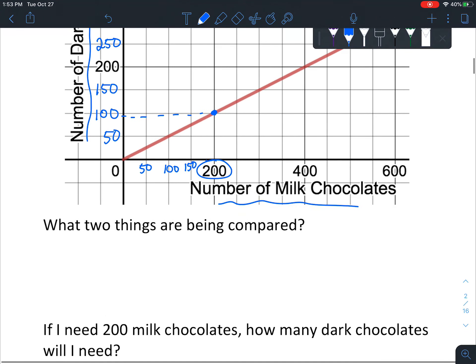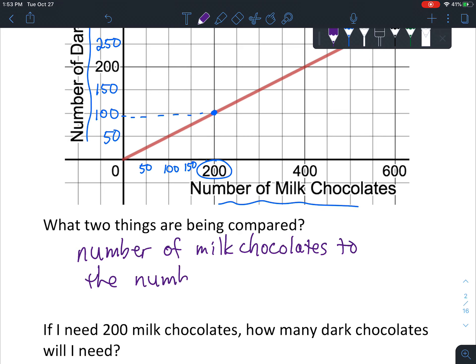So here it says, what two things are being compared? So we kind of already talked about that. Number of milk chocolates to the number of dark chocolates.